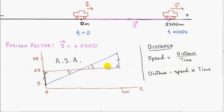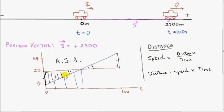Since we have a side that's the same in both triangles, both triangles are not only similar but congruent — equal in every way. This condition is abbreviated angle-side-angle: if we have two angles the same and one side the same in both triangles, then the triangles are congruent, and their areas are the same. To get the area under the blue line up to time 50, we get the area under the red line and subtract out this triangle.